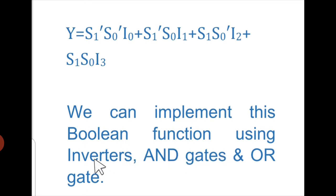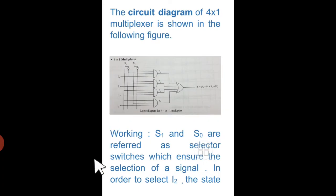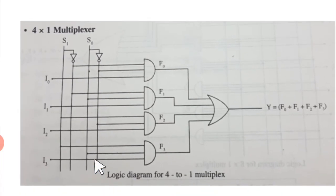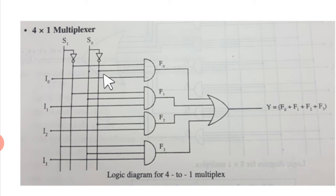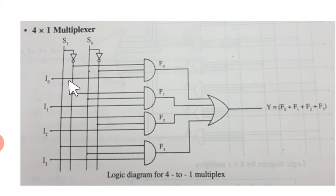Now let's see the circuit diagram — it is very important. In the 4-to-1 multiplexer circuit, the selector lines are S1 and S0, and the inputs are I0, I1, I2, and I3. To produce the combinations 00, 01, 10, and 11, each selection line passes through a NOT gate to produce its complement. So for S1 we have S1 and S1', and for S0 we have S0 and S0'. For the first combination where both complements are connected, it selects line I0. The combination S1' and S0 selects I1.